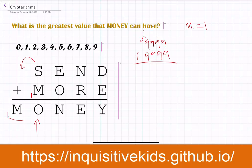When we look at the thousands column, we can see that S plus 1 equals a two-digit number. The only digit that works is 9, because 9 plus 1 equals 10, giving us a carry. So S equals 9, and O equals 0.